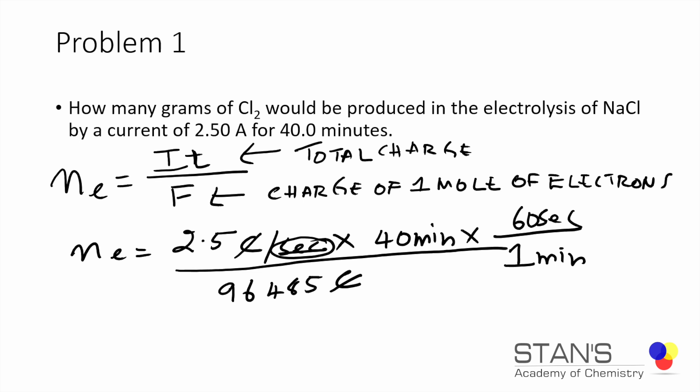Coulombs cancel out, seconds and seconds, minutes and minutes. We will get the number of moles of electrons equal to 0.0622 moles of electrons. So that's the number that we need for the calculation.